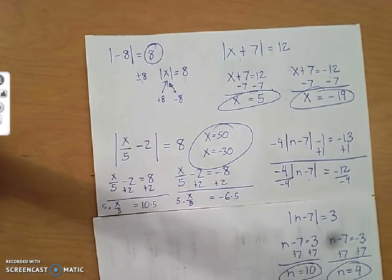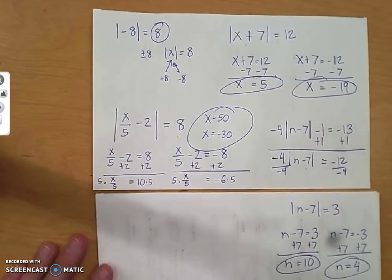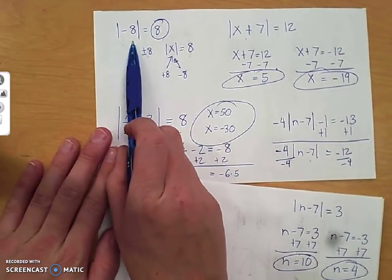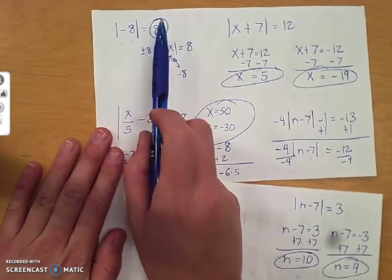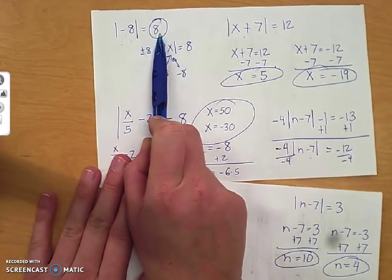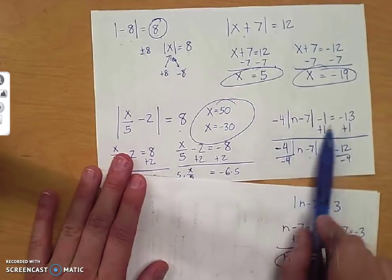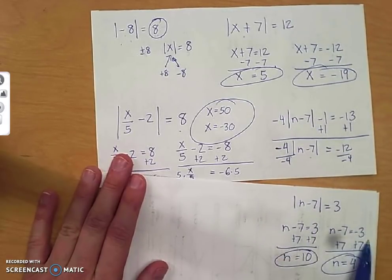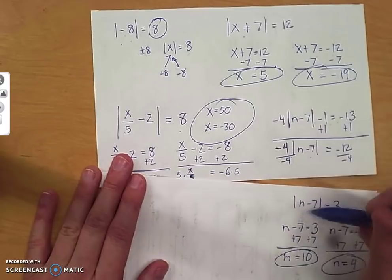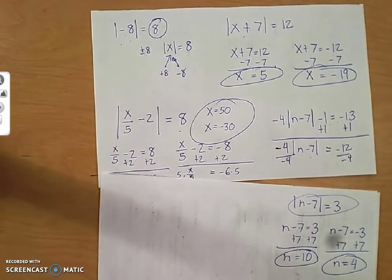That is absolute value. Two big ideas. The most common mistakes I saw. Absolute value of negative 8, absolute value always comes out positive and only positive. And if you're solving an absolute value equation before you set it equal to positive and negative, you have to get the absolute value all by itself.